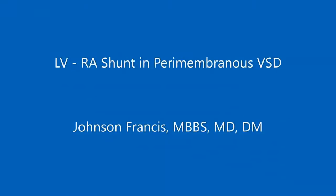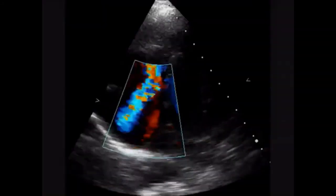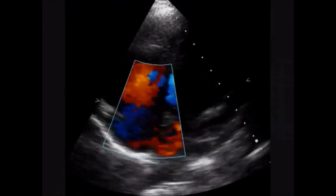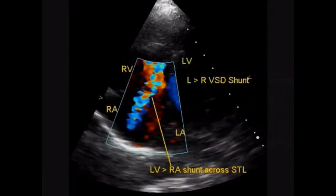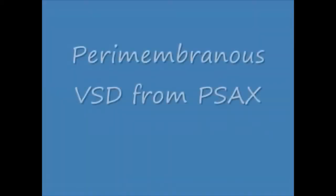Here is an echocardiogram of an LV-RA shunt in perimembranous VSD, now seen in the apical four-chamber view. The jet is passing from the LV to the RA through the septal tricuspid leaflet, for which there is a fenestration. This is the short axis view of the perimembranous VSD.